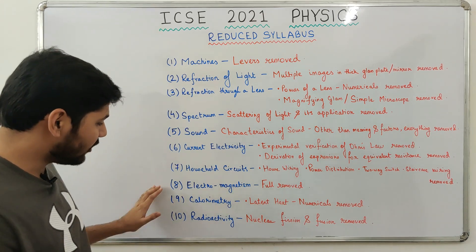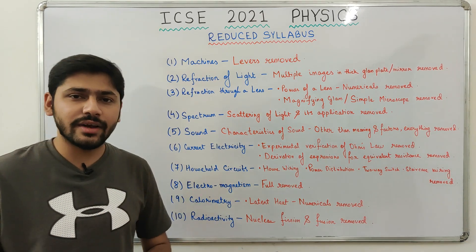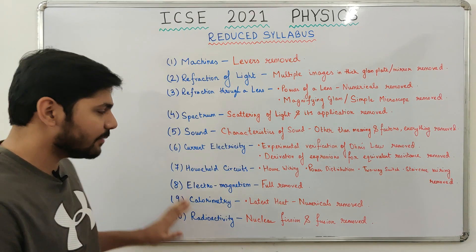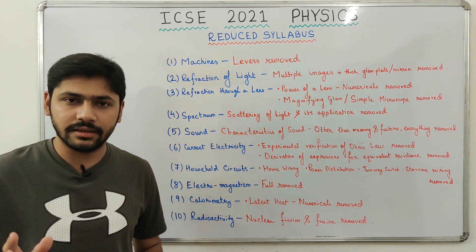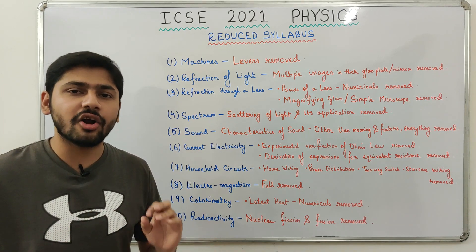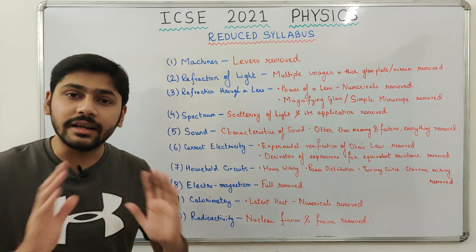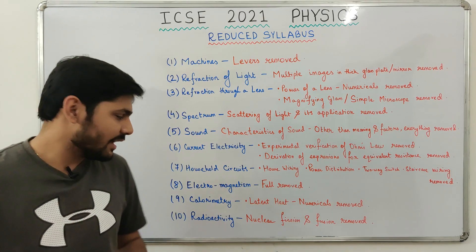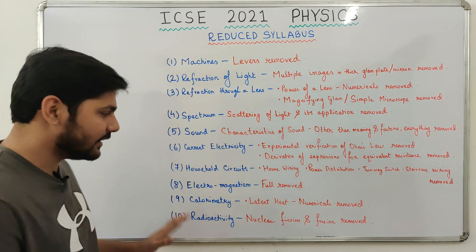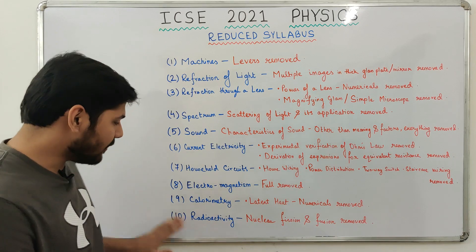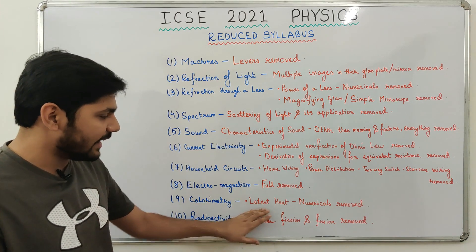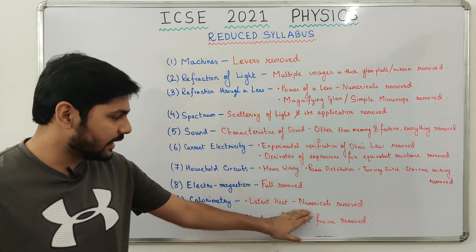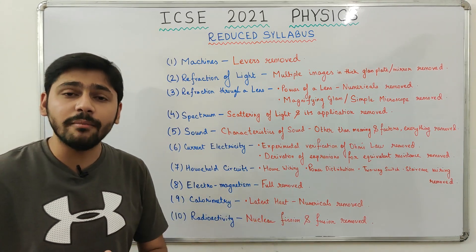Next comes electromagnetism — and this is where the fun is. The entire chapter of electromagnetism has been taken out from the syllabus. It was a very difficult chapter too. Next comes calorimetry, that is heat. From calorimetry, in the section of latent heat, the numericals have been removed.